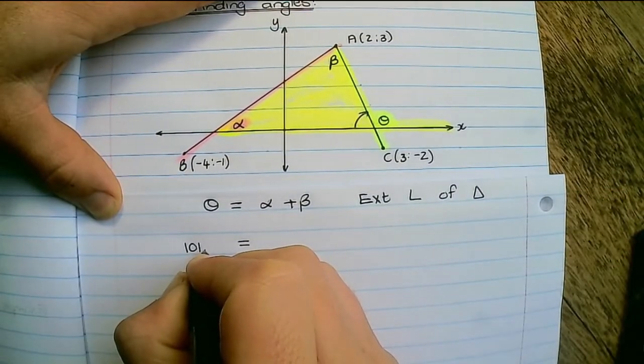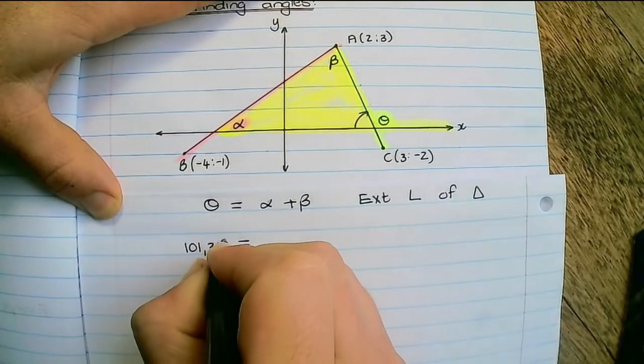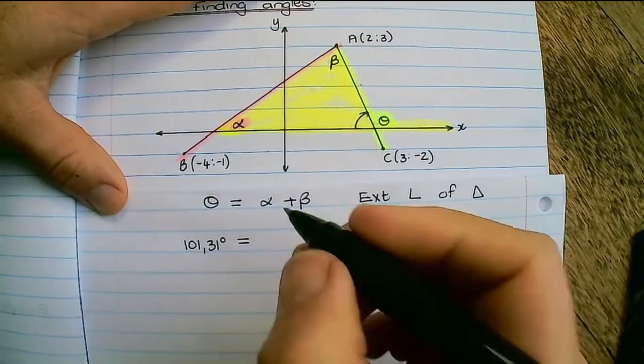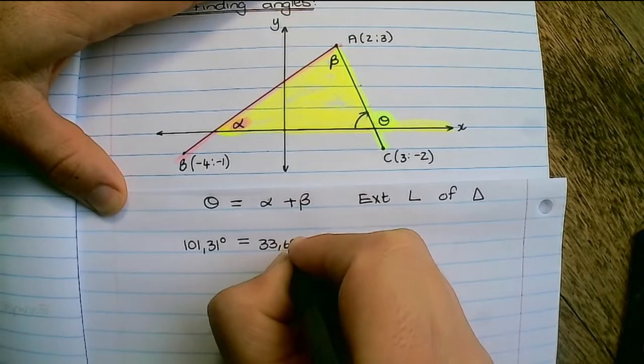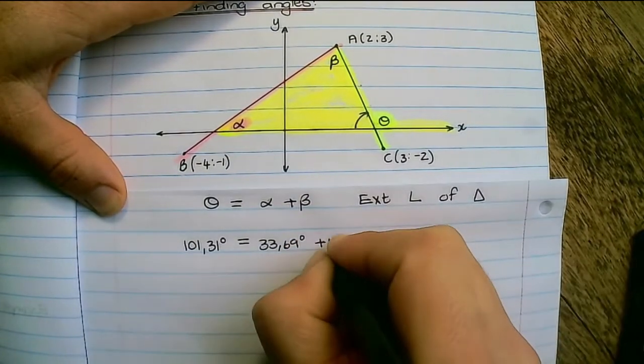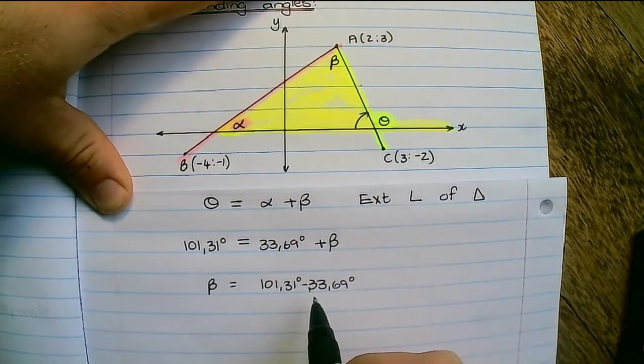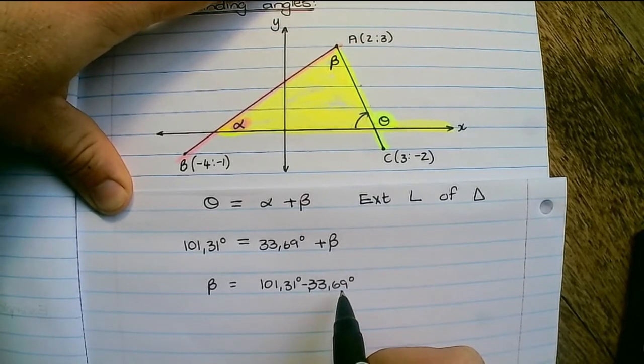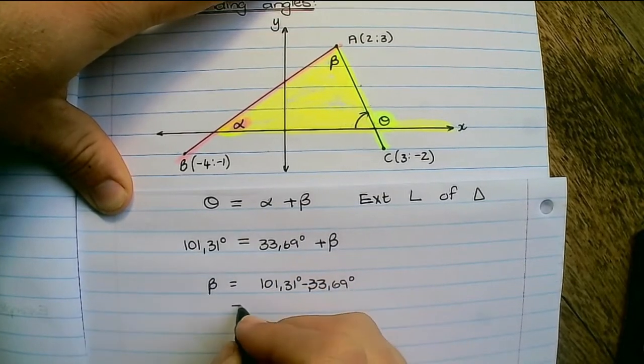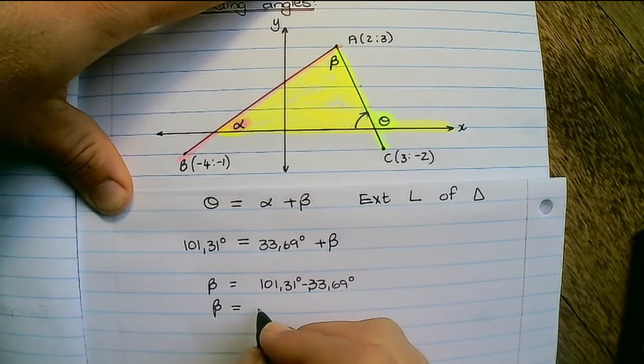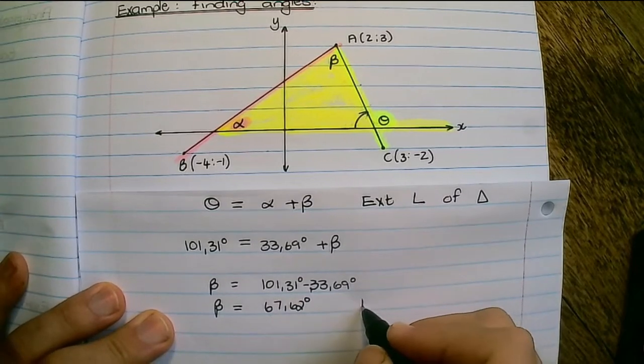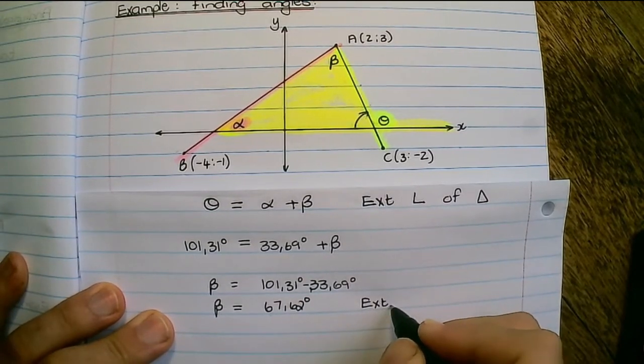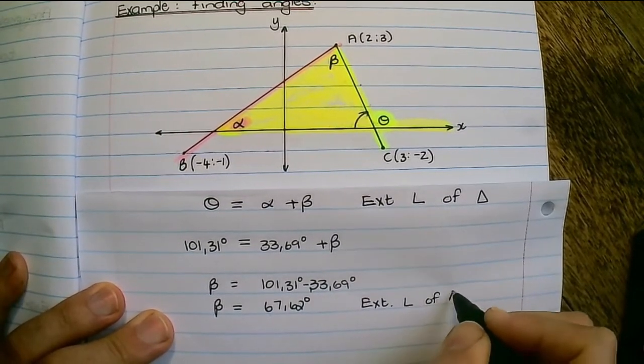And I've already solved theta which was 101.31 degrees, and alpha was 33.69 degrees plus beta. And then I subtract 33.69 from 101 degrees in order to solve beta. So therefore beta is 67.62 degrees, and our reason is the exterior angle of a triangle.